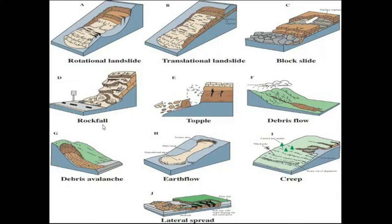Rock fall happens in areas where mountains are composed mainly of rocks; due to certain forces, rocks disintegrate and fall — this occurs frequently in areas like the Zojila area of Ladakh. Topple is a kind of movement perpendicular to the land surface. Debris flow happens when an area undergoes deforestation and receives large rainfall; the area composed mainly of soil material becomes very loose and flows down as debris. When the deforestation rate exceeds in certain areas, soil becomes loose and flows as debris.